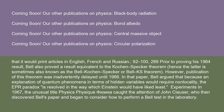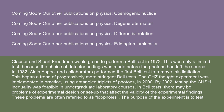In that paper, Bell argued that because an explanation of quantum phenomena in terms of hidden variables would require non-locality, the EPR paradox is resolved in the way which Einstein would have liked least. In 1967, the journal Physics caught the attention of John Clauser, who then discovered Bell's paper and began to consider how to perform a Bell test in the laboratory. Clauser and Stuart Friedman would go on to perform a Bell test in 1972, though this was only a limited test because the choice of detector settings was made before the photons had left the source. In 1982, Alain Aspect and collaborators performed the first Bell test to remove this limitation, beginning a trend of progressively more stringent Bell tests.